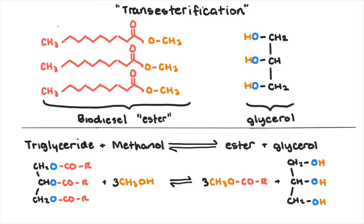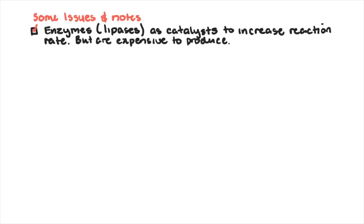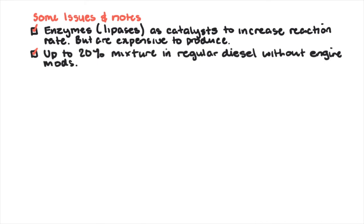The difference is that ester functional group. A basic catalyst like sodium or potassium hydroxide is also used to drive the reaction in the forward direction, which makes it economical. However, the process results in high temperatures, and soap can be a byproduct which reduces your yield. Enzymes like lipases can also be used as catalysts, as they naturally break down fats, which increases the reaction rate. No hydroxides means no soap byproducts, but enzymes are also expensive.